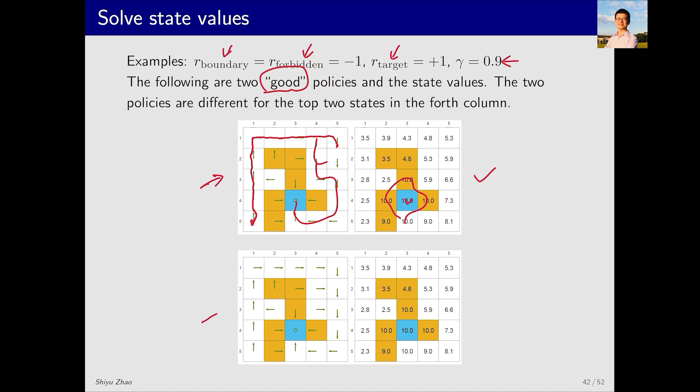Let's consider another policy, which is nearly identical to the previous one except for different actions in these two cells. The first moves down, while this one moves right. But they yield the same state values, indicating that moving down or right in these cells has the same outcome. Different policies can lead to the same state values.